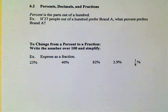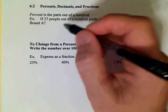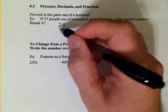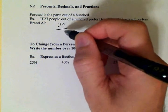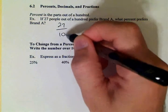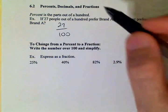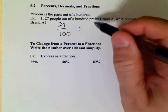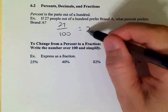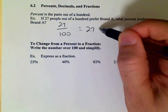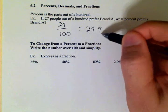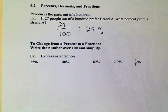Twenty-seven people out of a hundred prefer brand A — that's twenty-seven percent. The fraction is twenty-seven per one hundred, and twenty-seven per one hundred is the same as twenty-seven percent. That's all it is.